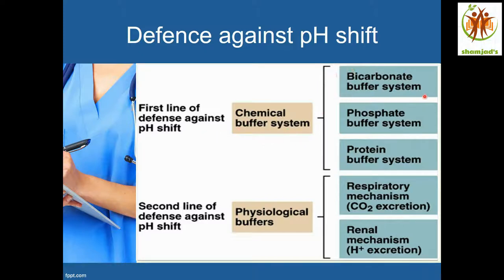The chemical buffer systems are: the bicarbonate buffer system, the phosphate buffer system, and the protein buffer system. The second line of defense is physiological buffers — the respiratory mechanism by CO2 excretion, and the renal mechanism by H+ excretion.